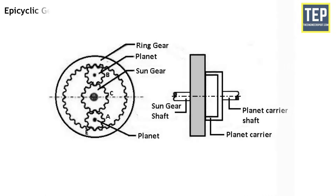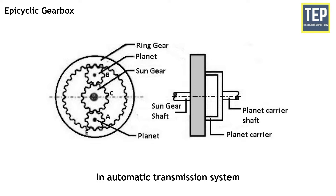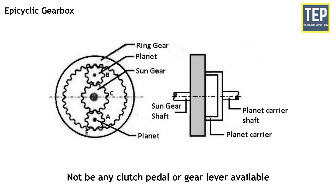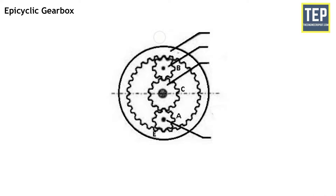In epicyclic gearing, at least one gear not only rotates about its own axis but also rotates bodily about some other axis. This type of gearbox is the most widely used automatic transmission system. In this system, there is only an accelerator and brake — there is no clutch pedal or gear lever available on the vehicle. The epicyclic gearbox has three gears, classified as: sun gear, planet gear, and ring gear.